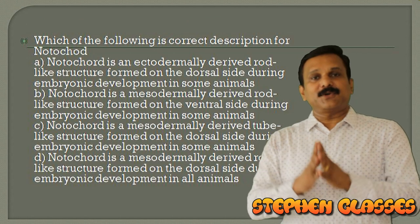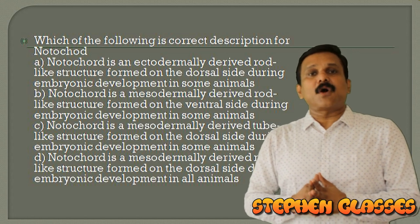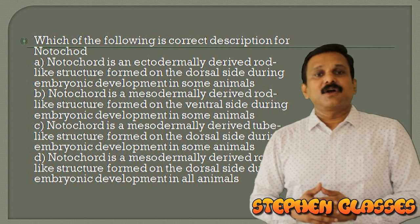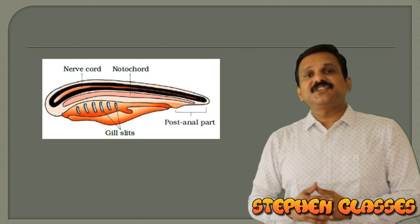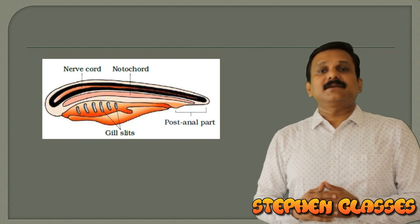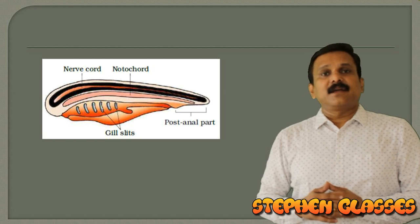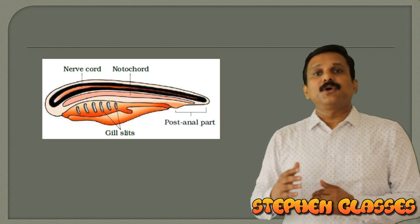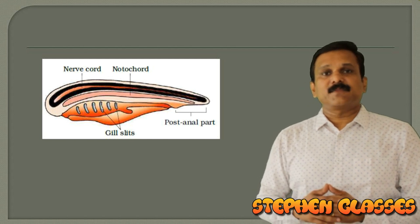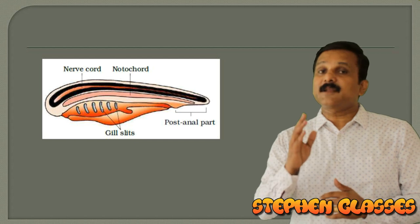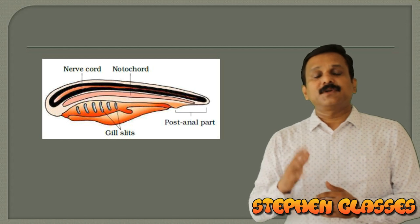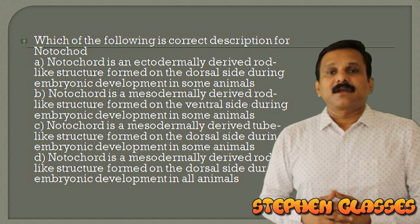Next question: which of the following is the correct description of the notochord? The notochord is applicable for chordates. Chordates have three characters: a notochord present on their dorsal side at least during the embryonic period, a dorsal hollow tubular nerve cord which is non-ganglionated, and gill slits. This diagram is very important and may be used for labeling questions.